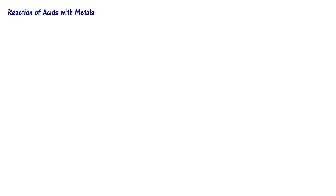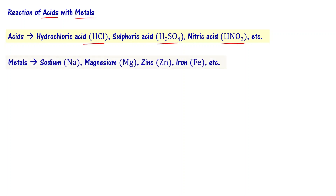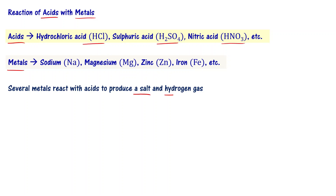Let us first start with the reaction of acids with metals. In general, when acids react with metals, they form a salt and hydrogen gas. Not all metals react with acids — please note this. Gold and platinum may not react with acids; these noble metals don't really participate in the reaction. But the majority of metals react with acids to produce a salt and hydrogen gas.